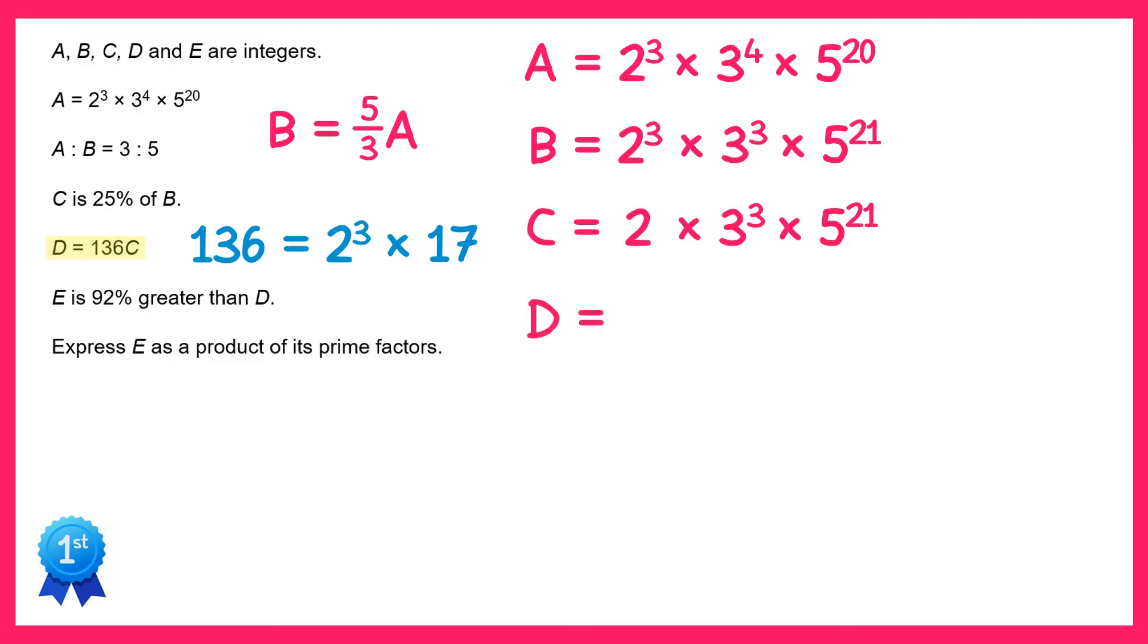So D equals. Now if I multiply it by 2 to the power 3 and there's already a 2 there I get 2 to the power 4. The powers of 3 and 5 will remain unchanged and then there's a 17 now at the end.